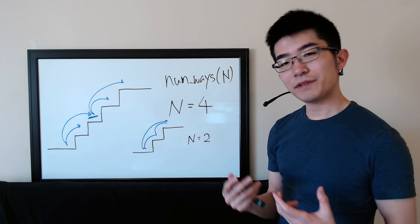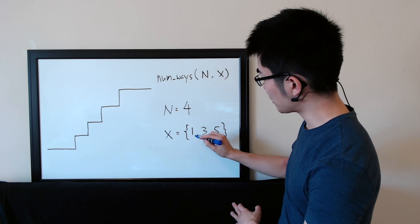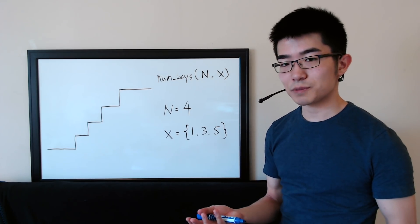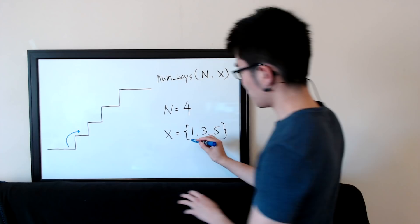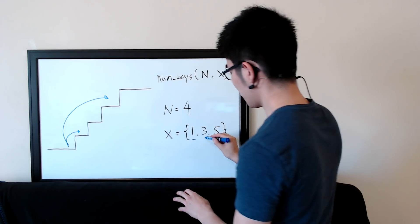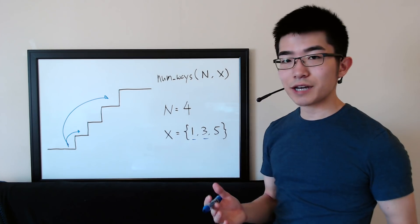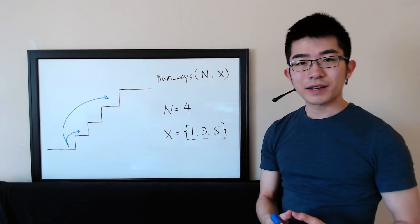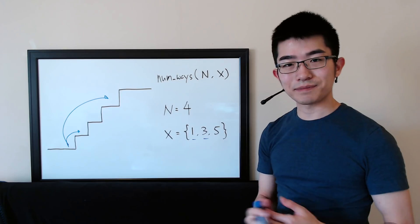Once you're done with this problem, think about this variation: what if in addition to n you're also given x, which is a set of positive integers representing the numbers of steps you're allowed to take, instead of just one or two steps? For example, you can take one or three steps, but not two or five. Maybe pause the video here if you want to practice and try solving both problems.